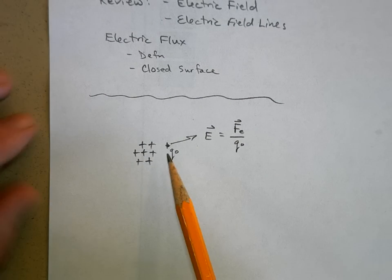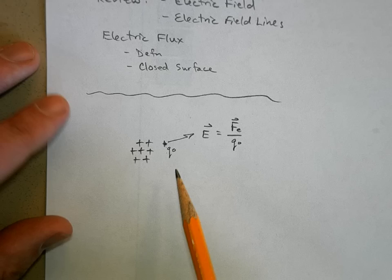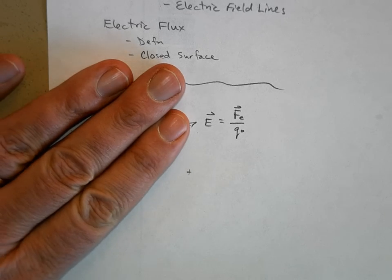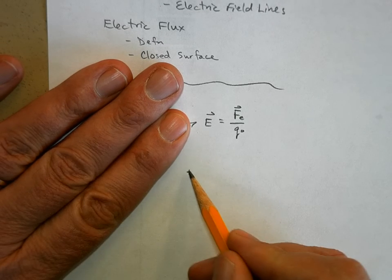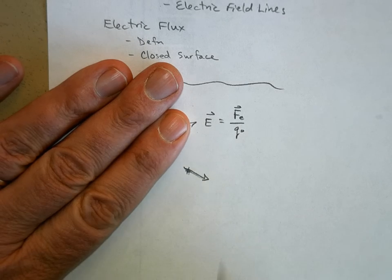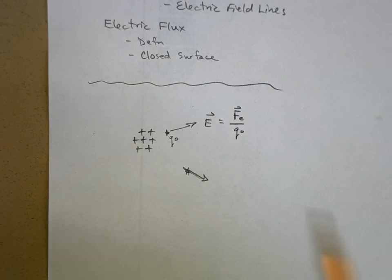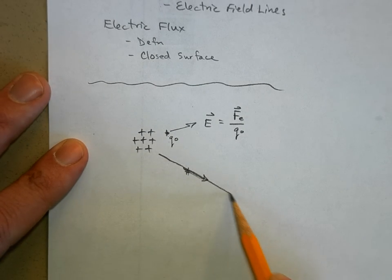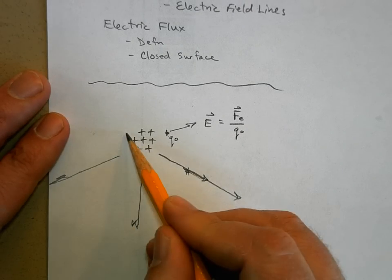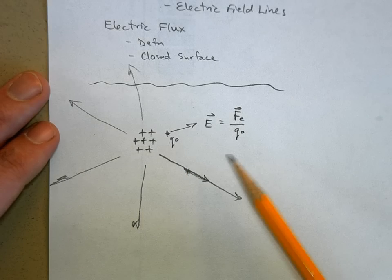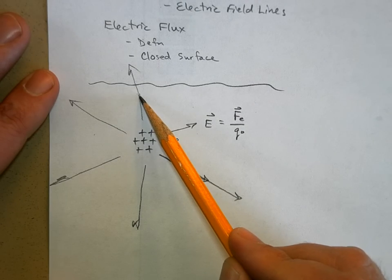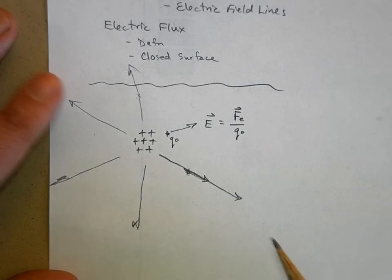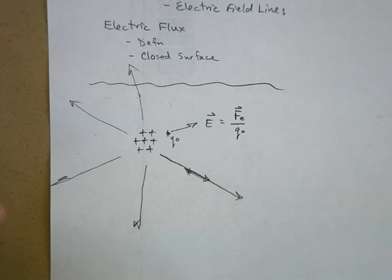The electric charge is not a conscious creature — it just feels forces. It doesn't know there's charge over there; it just feels a repulsive force. We describe that force using electric field equations, and then we can connect these forces and draw electric field lines. The electric field lines mean that if I'm a positive test charge right here, I'm going to get pushed in this direction. The farther apart the field lines are, the weaker the field.